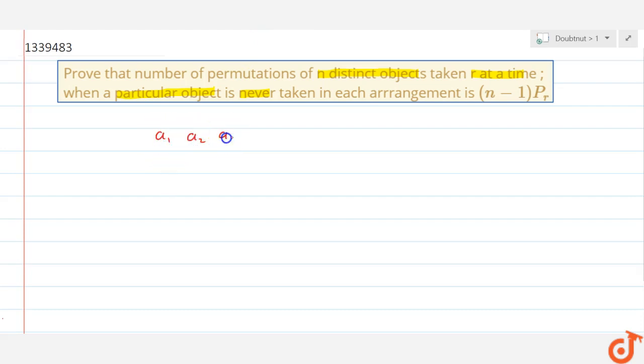Now we have to arrange these n objects in different places. So let these spaces be r1, r2, r3, up to rr. In different objects we have to arrange these n distinct objects.